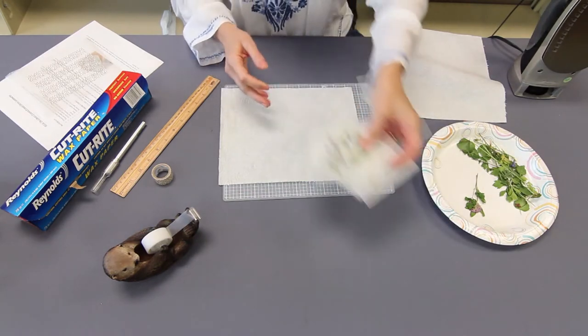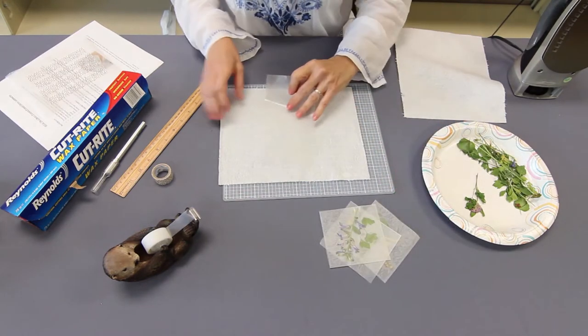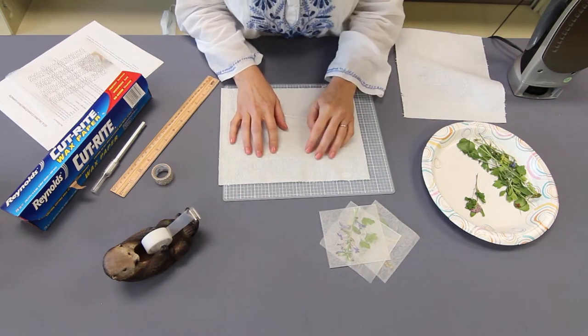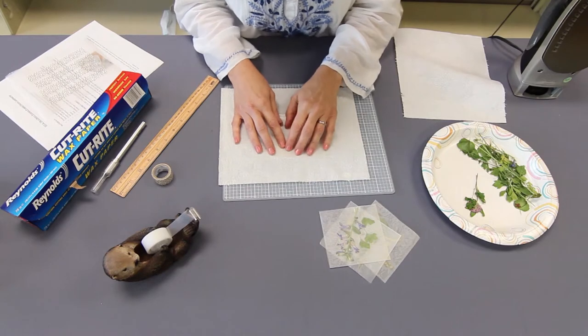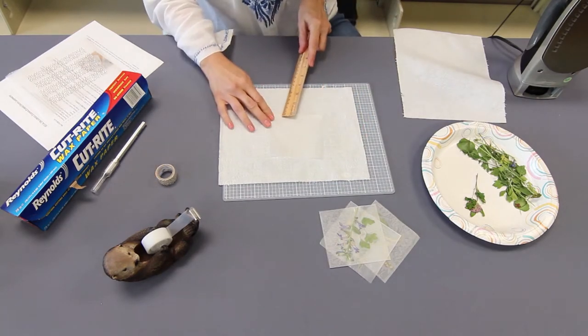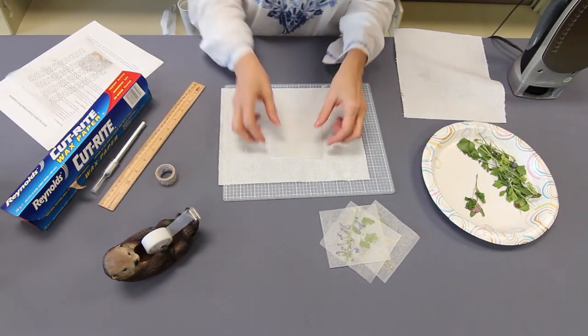I've already made a couple. We have three here. We need one more. So fold it in half. Get the edges as close to matching up as you can. Get your ruler, get a nice sharp crease.